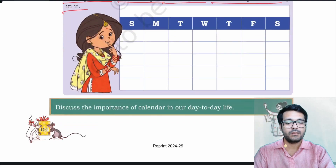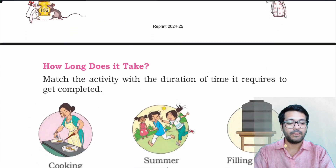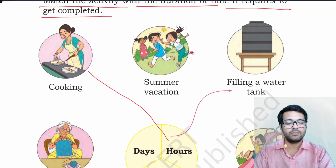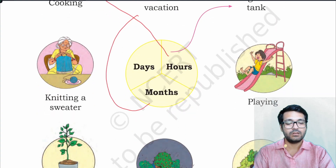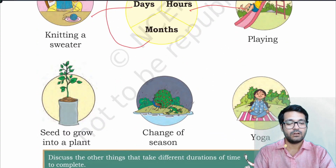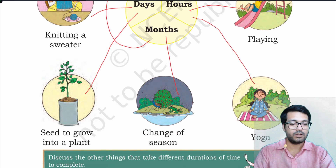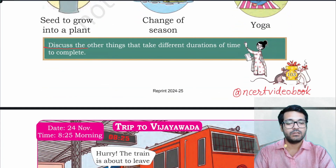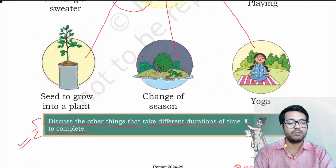Project: Discuss the importance of a calendar in our day-to-day life. How long does it take? Match the activity with the duration of time it requires. Cooking takes hours. Summer vacations take months. Knitting a sweater takes days. Filling a tank takes hours. Playing takes hours. A seed growing into a plant takes a few days. Change of season takes a few months. Doing yoga takes a few hours. You could match it like this. Discuss other things that take different durations of time.